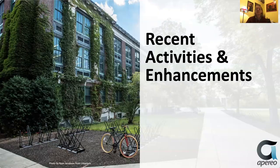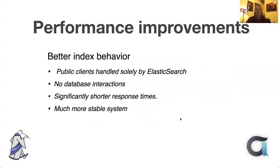Recent activities: there have been a lot of performance improvements — there almost always are in each release, but there have been some significant ones lately. Last year I finished off the changes that allowed the public clients to only use Elasticsearch with no database interactions. Some of our biggest problems had been running out of database connections or connections hanging. There's none of that now. We get significantly shorter response times even on a fairly small machine — the bulk of responses are under 100 milliseconds, and I've seen systems where you can get it down to about 25 milliseconds. It's much more stable.